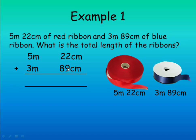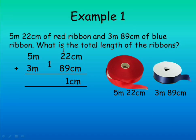2 plus 9 is 11, so you write 1 and carry 1. One ten plus two tens is three tens. Three tens plus eight tens is eleven tens, so everything gives 111 centimeters.